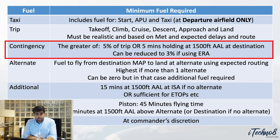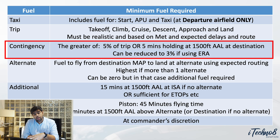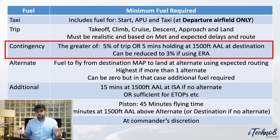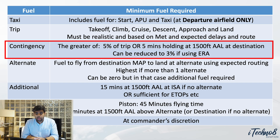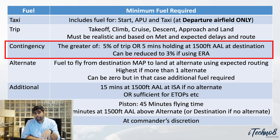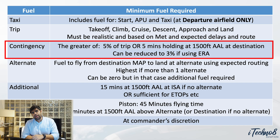The first C is contingency. Contingency can either be 5% of your trip fuel, or 5 minutes of holding at the destination at 1500 feet above aerodrome level — whichever is greater. There is one condition: if the question mentions an enroute alternate, or ERA, that means you can bring that 5% down to 3%, which is a special approval. If you see ERA or enroute alternate mentioned, you can use 3% instead.